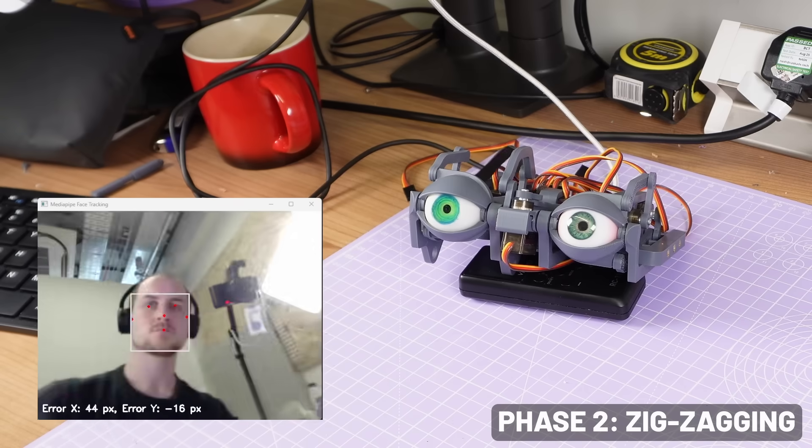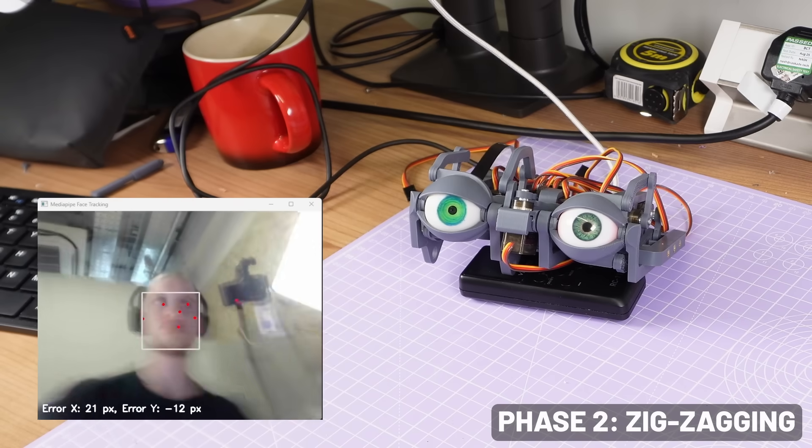Secondly, the eyes were erratically jumping back and forth. This was a pretty simple one. I just needed to add a dead zone, so that if I stayed within a few pixels of the center, the movement script wouldn't trigger.